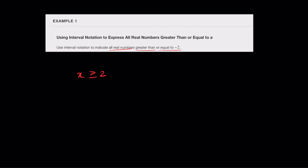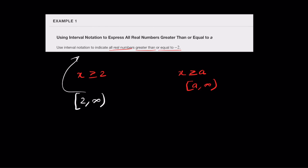Let's try an example: using interval notation to indicate all real numbers greater than or equal to negative 2. So x greater than or equal to 2 — this is similar to x greater than or equal to a, for which we write closed interval a comma infinity open interval. So it becomes closed interval 2 comma infinity open interval. This is the interval notation for this problem.